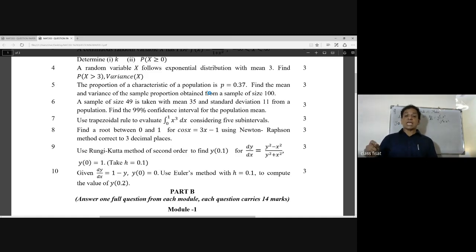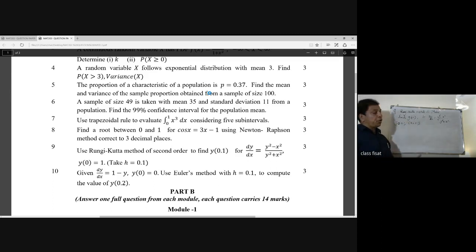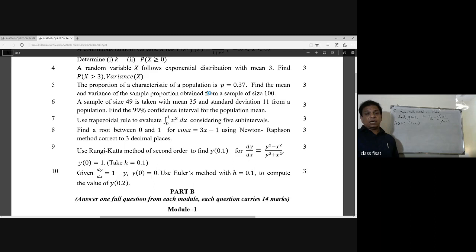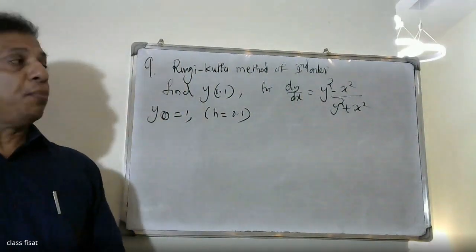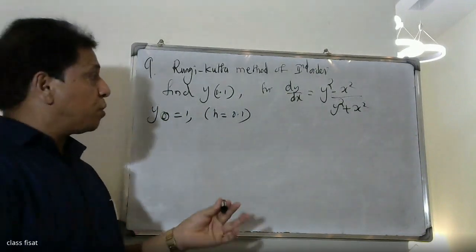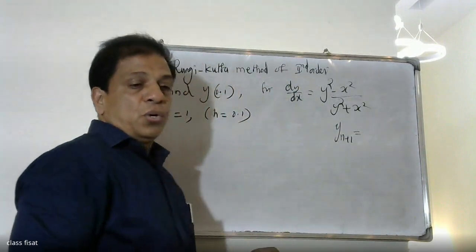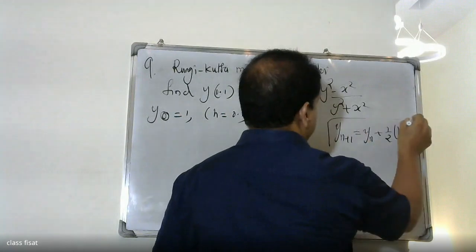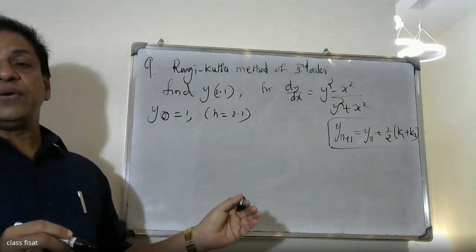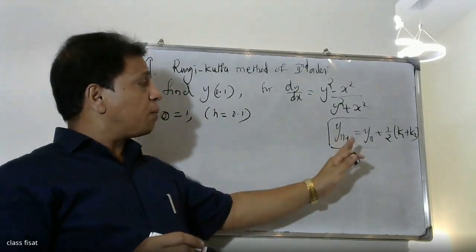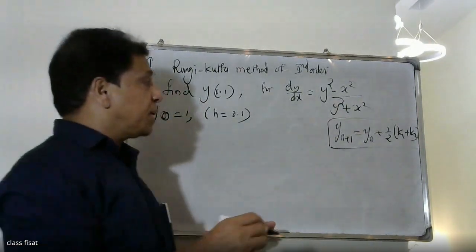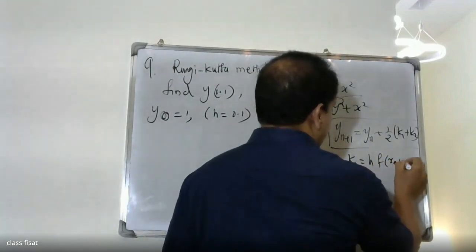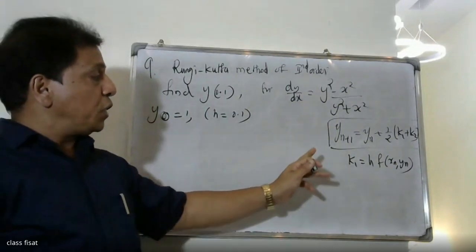Runge-Kutta method of second order — find y(0.1). First we write the formula for second order. The formula is: y_{n+1} is equal to y_n plus one-half into (k1 plus k2).